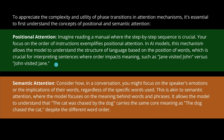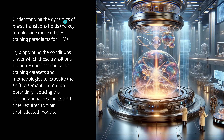Just to be sure: definitions of positional and semantic attention with an example. If we understand the dynamics of this phase transition, it is key to unlock more efficient training mechanisms for our large language models, vision language models, and vision language action models — robotic systems built on the attention mechanism. By pinpointing the conditions under which these transitions occur, we could tailor specific training datasets and new methods to shift to a semantic attention phase, reducing computational resources and training time.